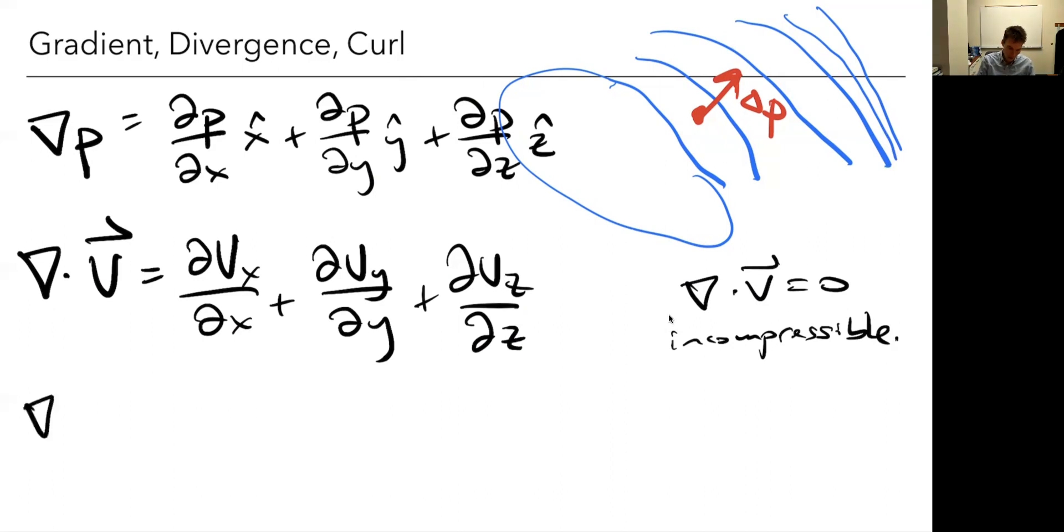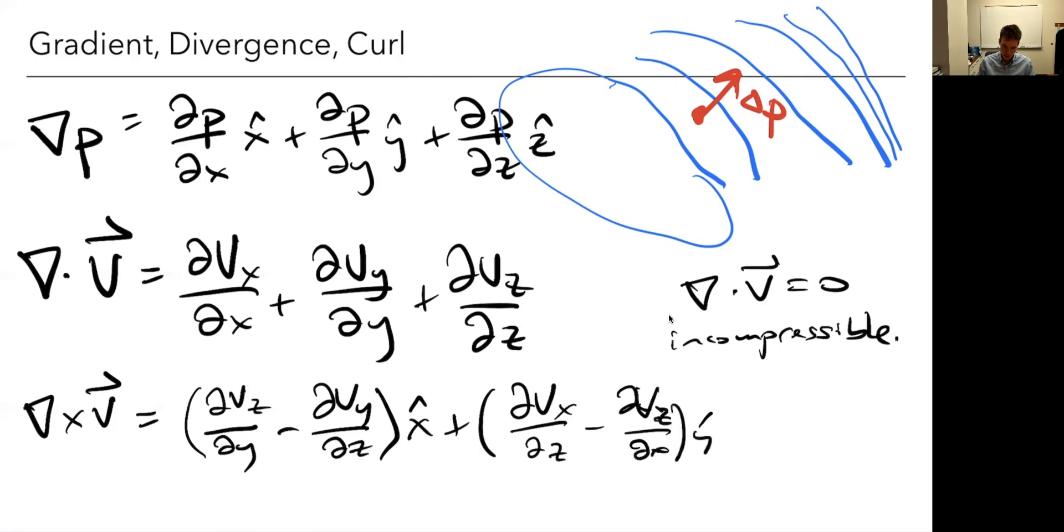And another quantity is the curl, and this operates on a vector, but produces a vector instead of a scalar like the previous one. And here's in Cartesian coordinates, and I'm just going to write one of the terms. So this is the partial of the z component with respect to y minus the partial of the y component with respect to z, and that's the x component of the vector plus the partial of the x component with respect to z minus the z component with respect to x in the y component, plus there's a z component. And you can get this from a determinant, you can review that if you don't recall these things, but if I'm taking the curl of velocity, or in general, this measures how much a vector field is rotating, basically.